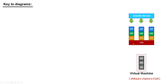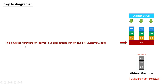So in the previous video, the simple version, we had this red brick which was the hardware. Just to spell things out a bit more, what we're saying is that this hardware is the physical hardware or server that our applications run on. So this might be something like a Dell, HP, Lenovo, Cisco server, or Super Micro — it's the physical box that this runs on.